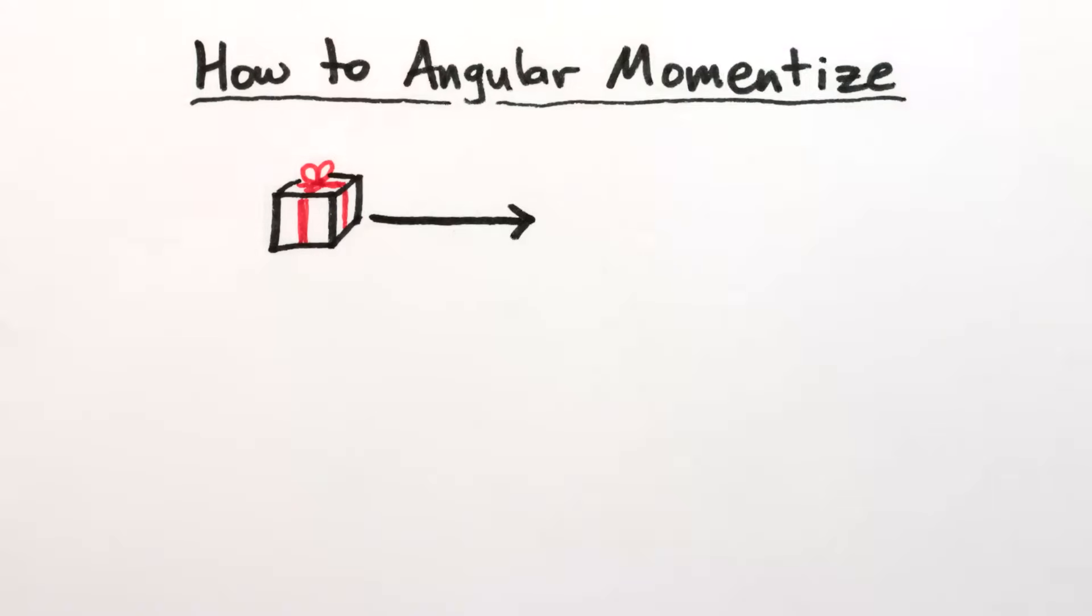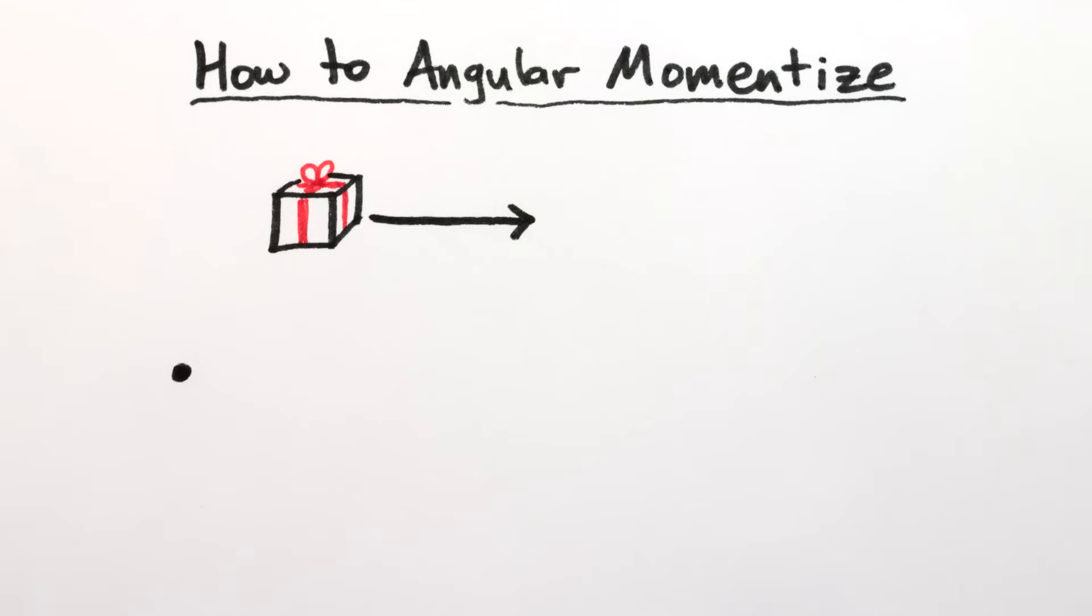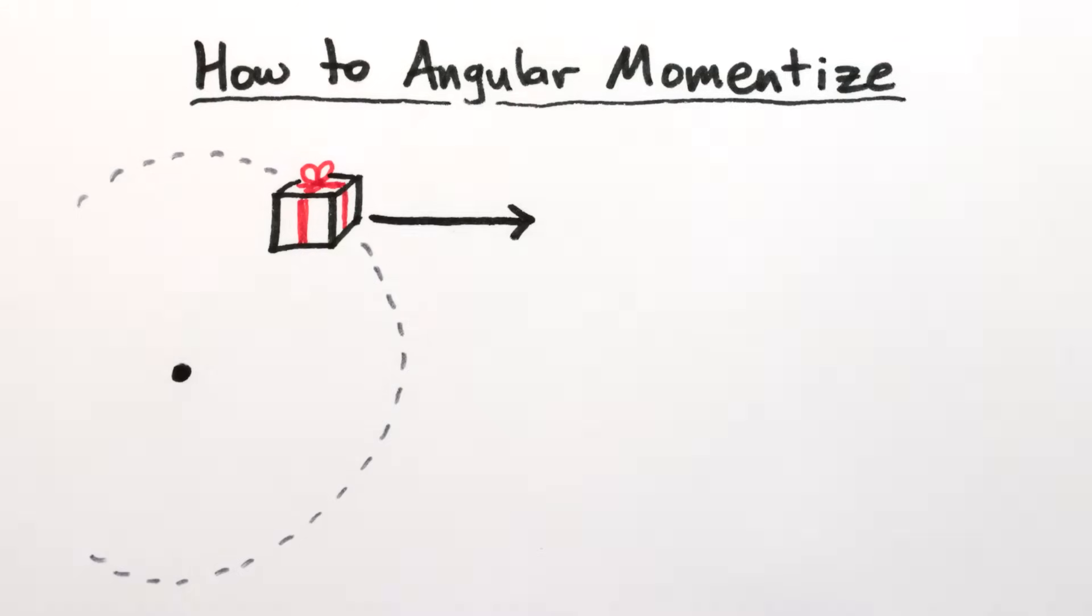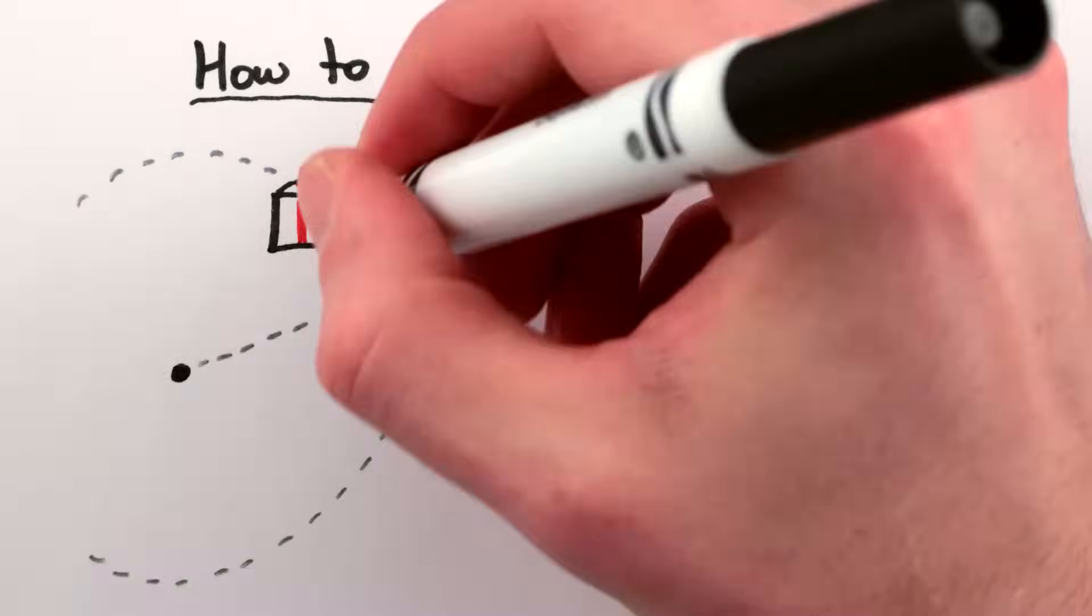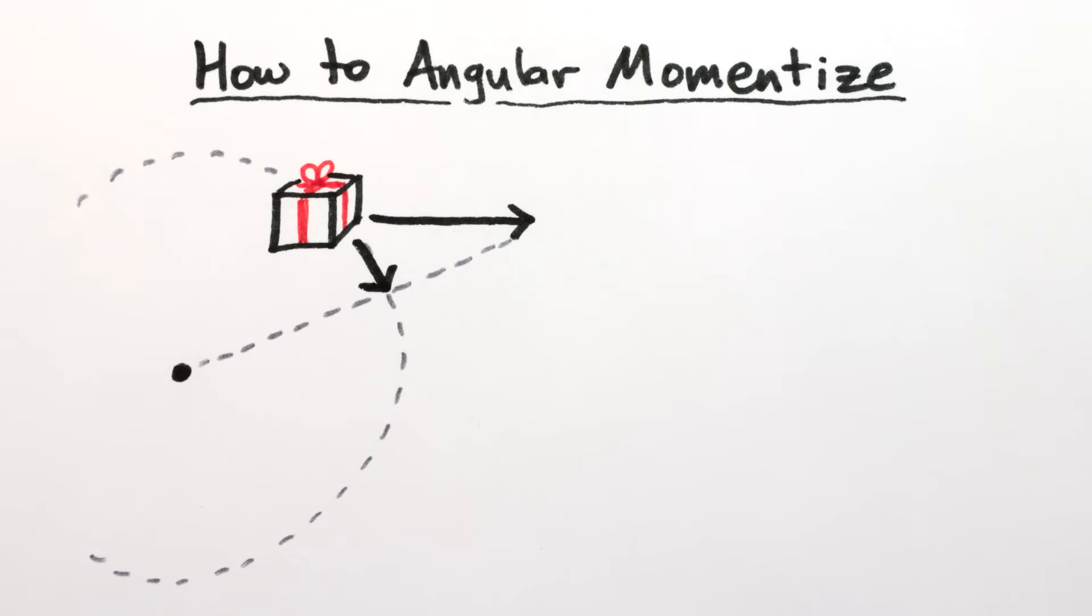And angular momentum is simple in theory. Pick a point. Any point. Pretend your object is moving in a circle around that point. Figure out how fast the object is moving along the circle, never mind that it probably isn't moving exactly along the circle, and that the circle might have to change size over time to follow the object.